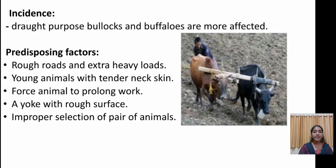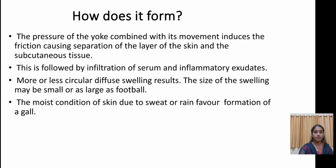The predisposing factors which affect Yoke Gal include: rough roads and extra heavy loads; young animals with tender neck skin; forcing animals to do prolonged work; a yoke with a rough surface; and improper selection of a pair of animals.